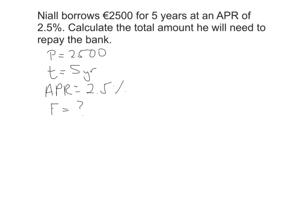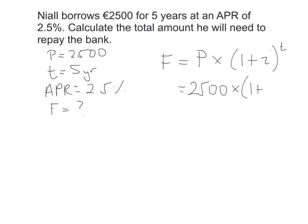Using our formula: F equals P multiplied by (1 plus i) to the power of T. Filling in what we have: F equals 2,500 multiplied by (1 plus 0.025) to the power of 5. Remember, i needs to be a decimal, so 2.5% becomes 0.025. Tidying up the bracket gives us 2,500 multiplied by 1.025 to the power of 5.